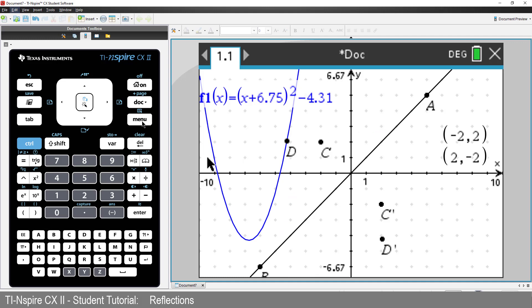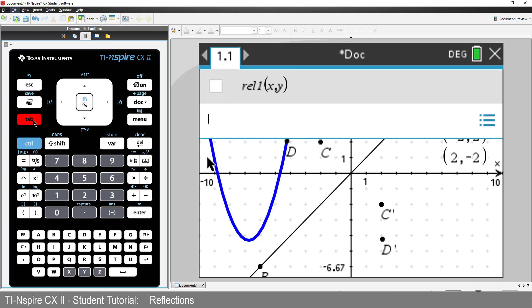It appears that a reflection in the line y equals x reverses the coordinates. It swapped the x and y values. To create the graph, again I'll use the relational graphing tool. Our original function could have been written as y equals f1 of x, so I'll just swap the x and y around and write x equals f1 of y.